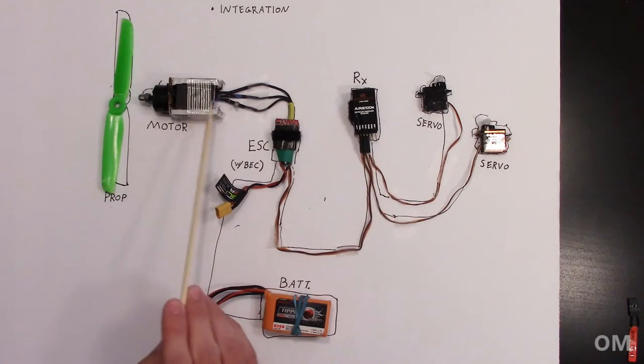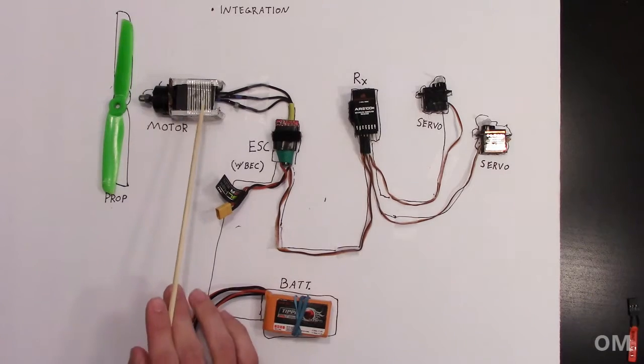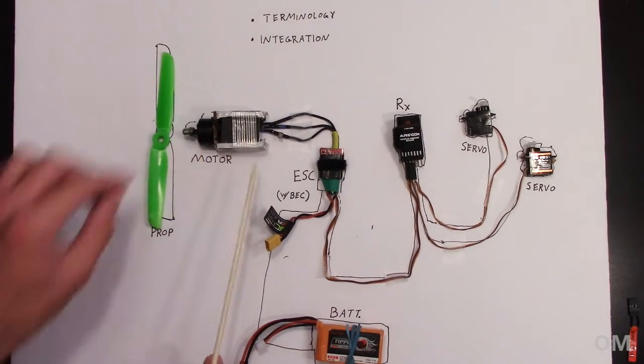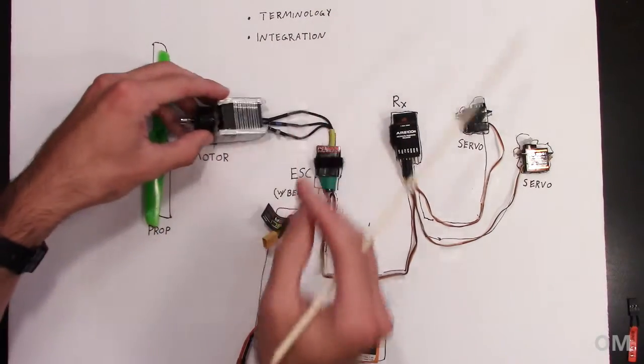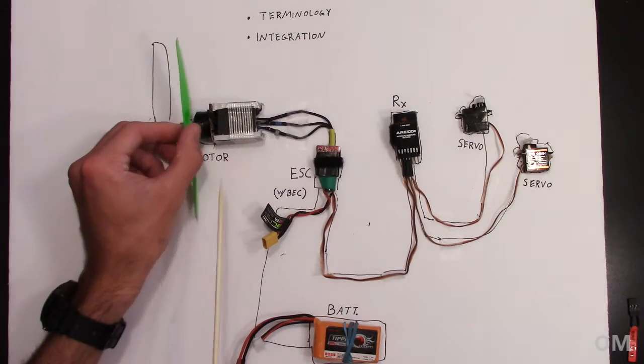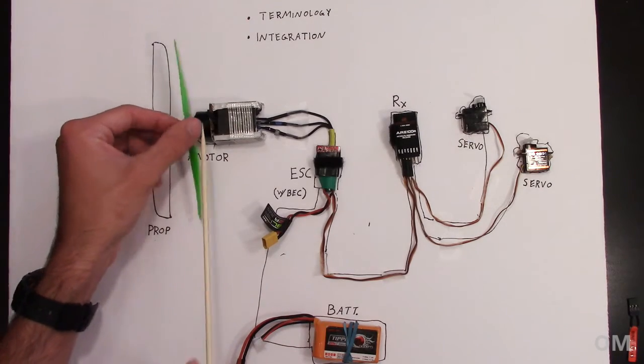This large box structure is just the mounting pod that I have it in, but this black piece right here is the actual motor itself. And then of course we have our propeller that is screwed down or bolted down onto the motor.